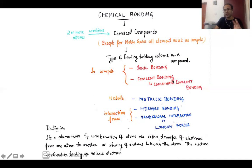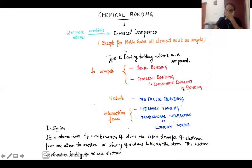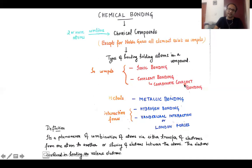Covalent bonding can be described as bonding where there is sharing of electrons between the combining atoms. Whenever there is no complete transfer but rather a synergistic effect — both atoms helping each other achieve a noble gas configuration — that is called covalent bonding. Coordinate covalent bonding is a special type where sharing occurs but the shared electrons are contributed by only one of the atoms; the other atom just utilizes those shared electrons.